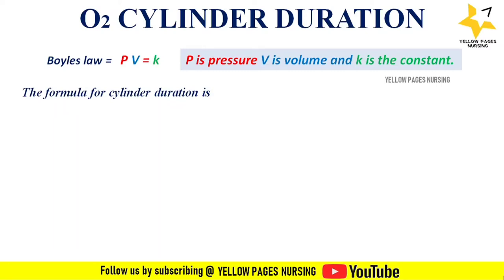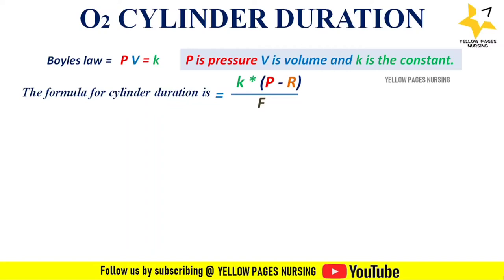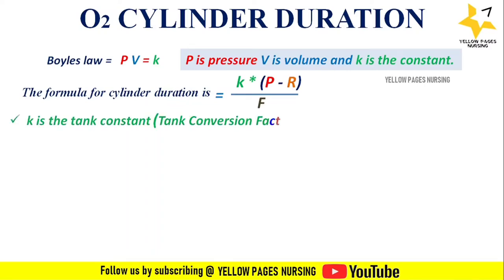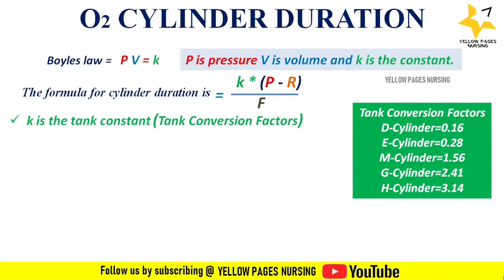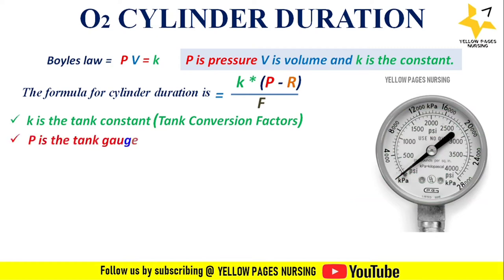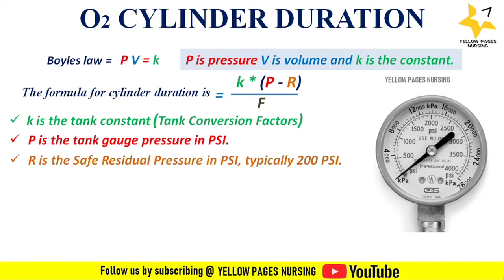The formula is: K multiplied by (P minus R), divided by F — where K is the tank constant or tank conversion factor. Each cylinder size has its own constant, as shown in the image. P is the tank gauge pressure in PSI (pounds per square inch), and R is the safe residual pressure in PSI, typically 200 PSI.